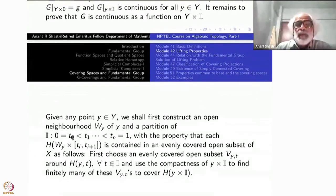A partition of the interval with the following property that W_i cross [t_i, t_{i+1}], H of this is contained in an evenly covered open subset of X. So this is what I want to find out. So how do we do that?